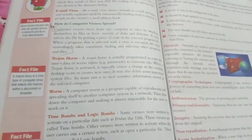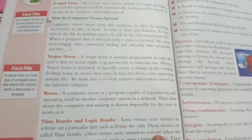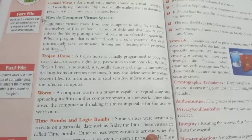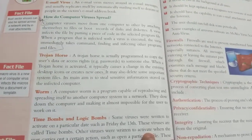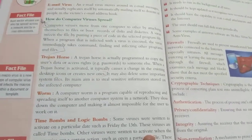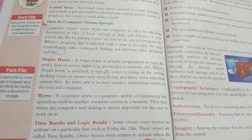First is the Trojan Horse. A Trojan Horse is actually programmed to copy the user data or access rights to someone else.